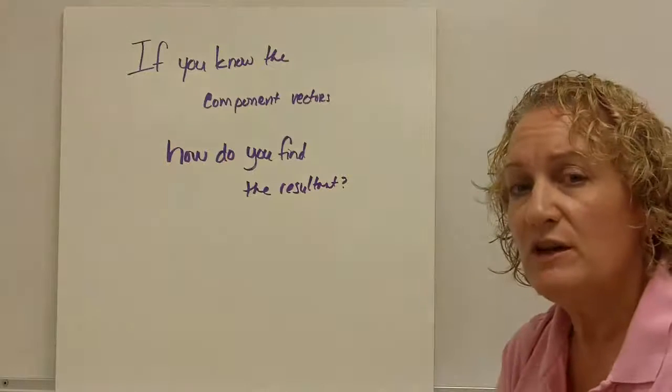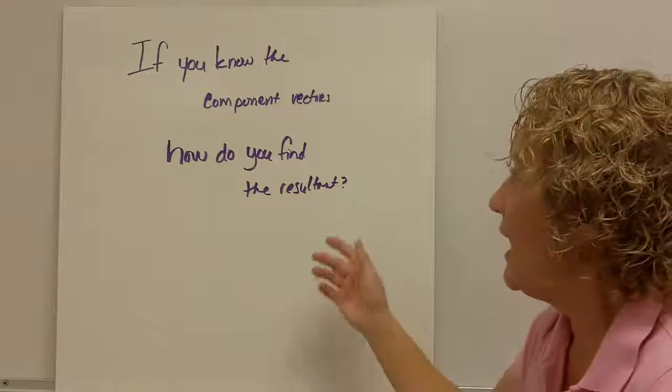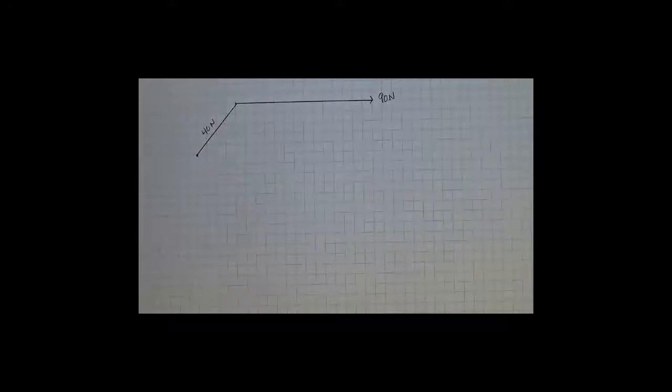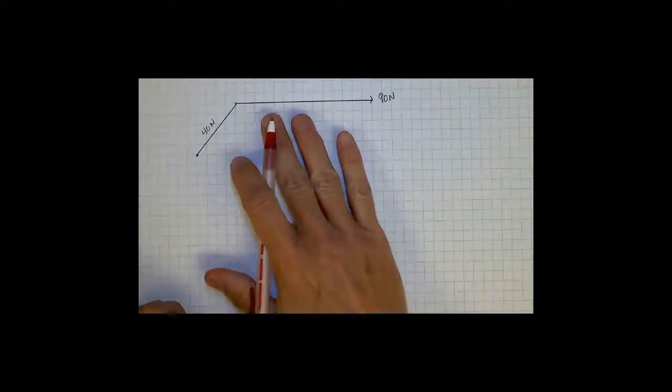If you know the component vectors, so you know the two pieces, how do you find the resultant? Okay, so the question is, how do I add vectors that are not parallel, not perpendicular? I know the two vectors. I'm looking for the resultant.